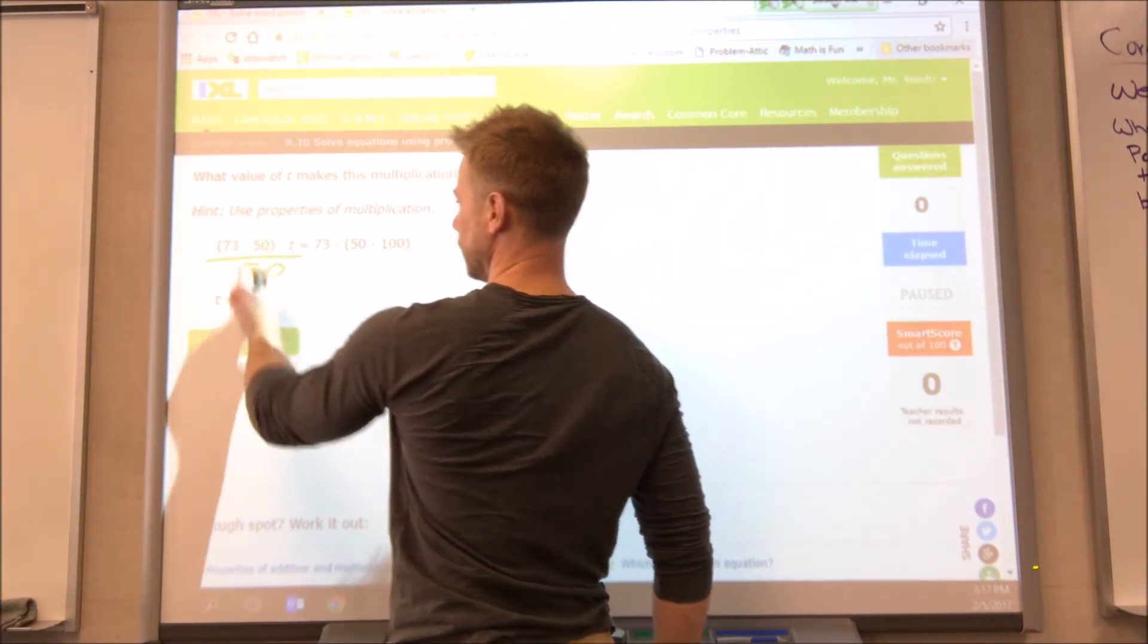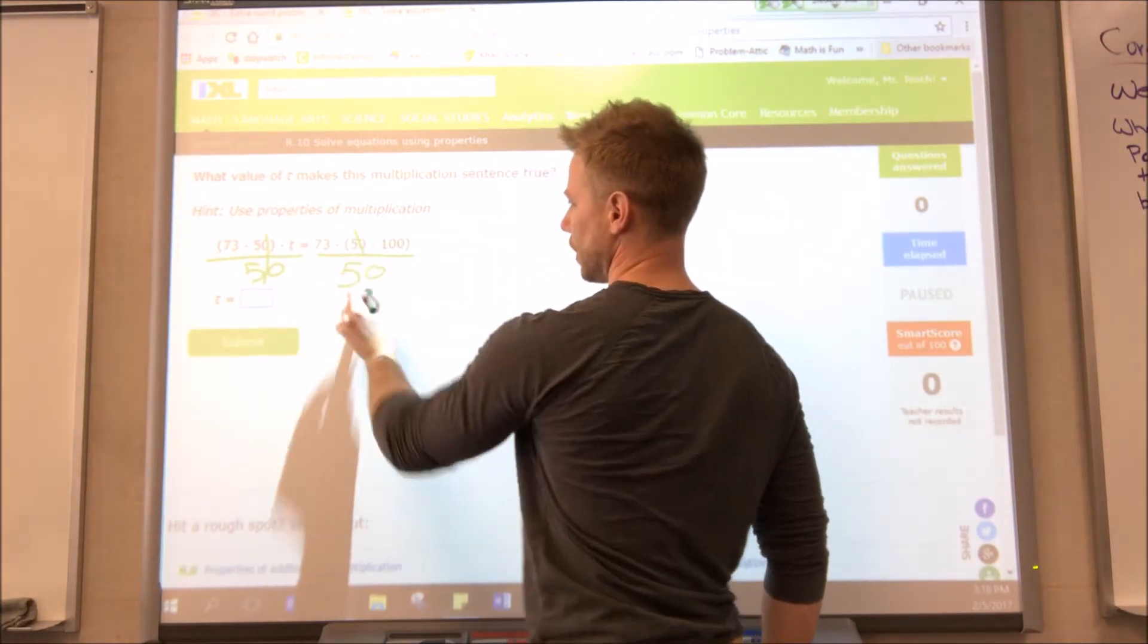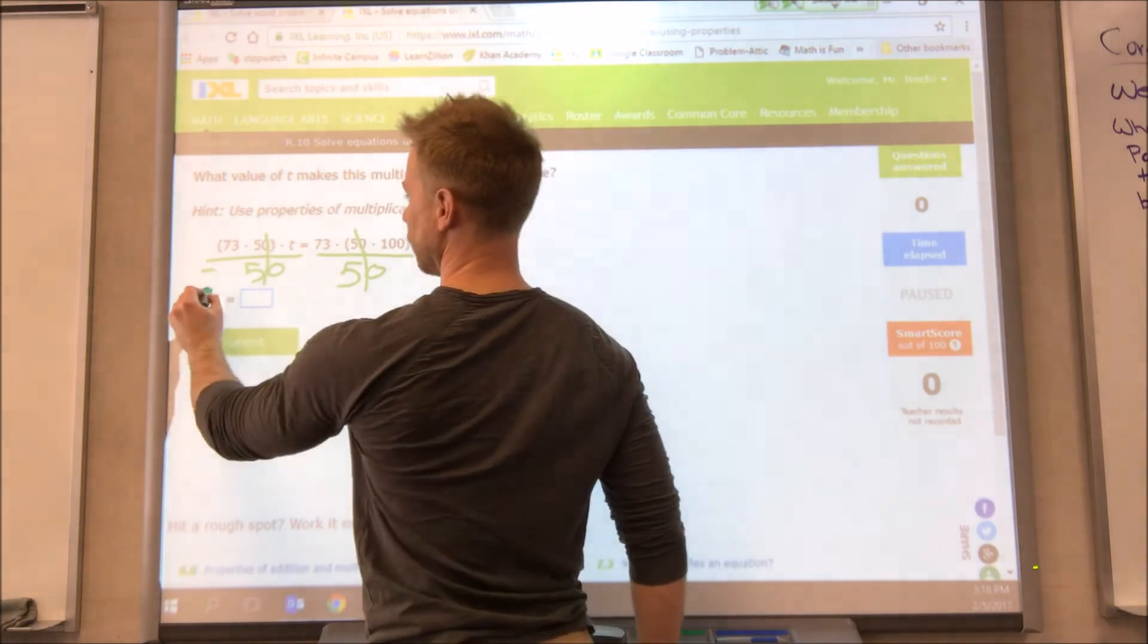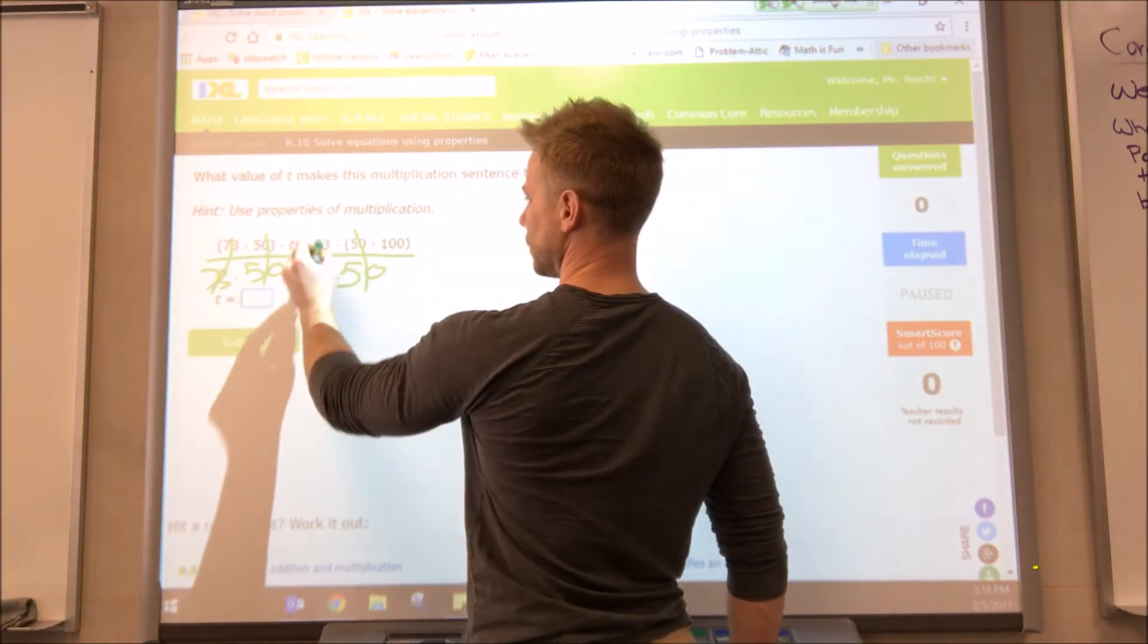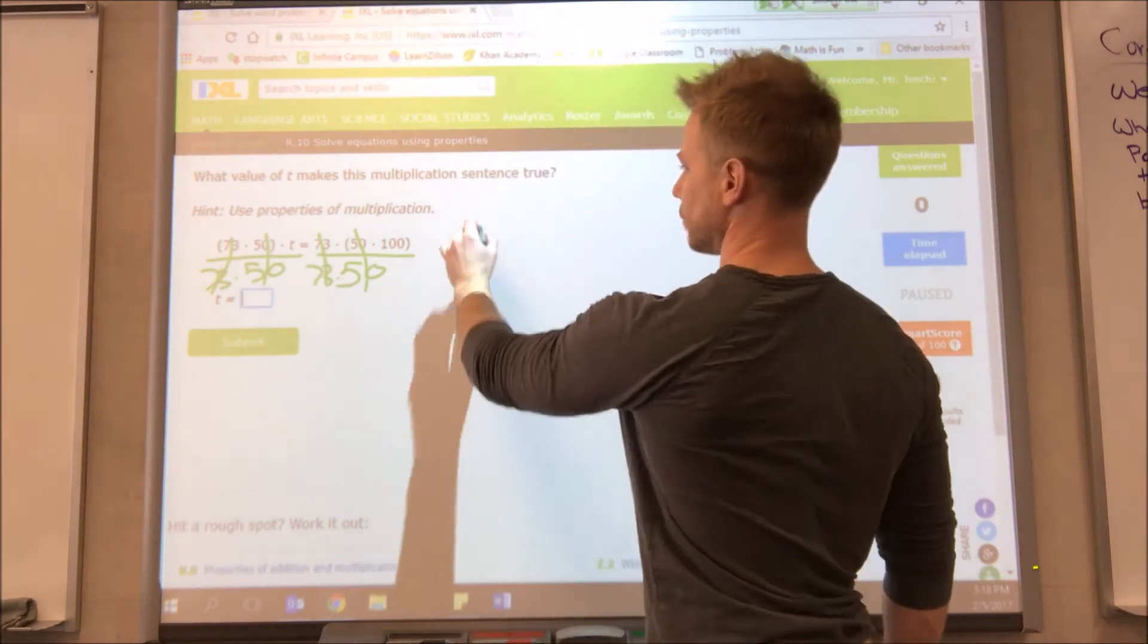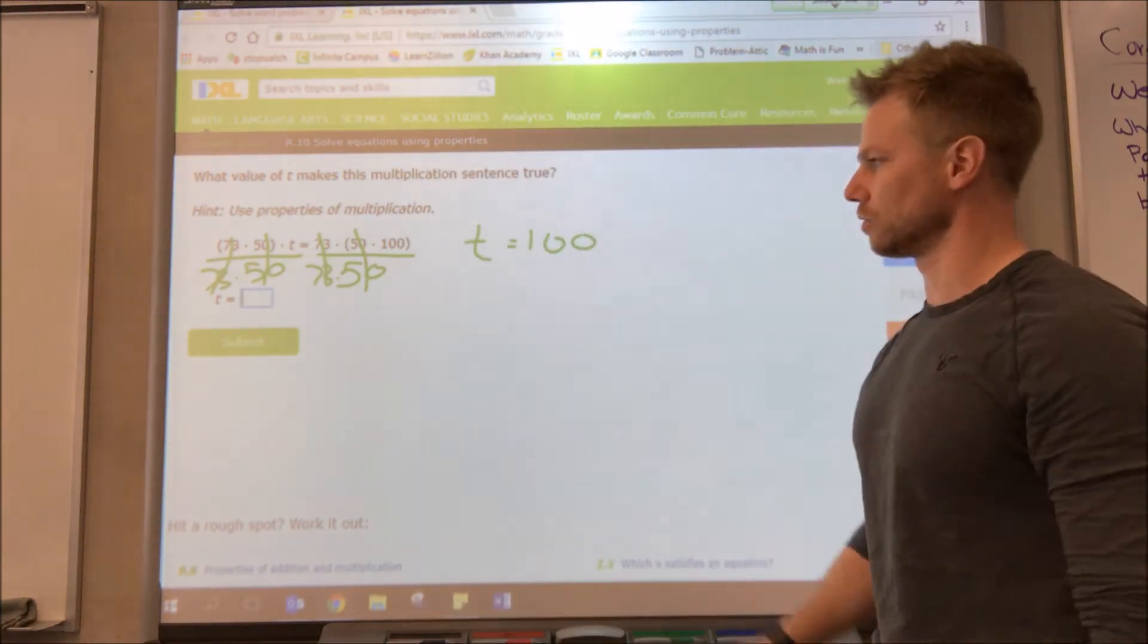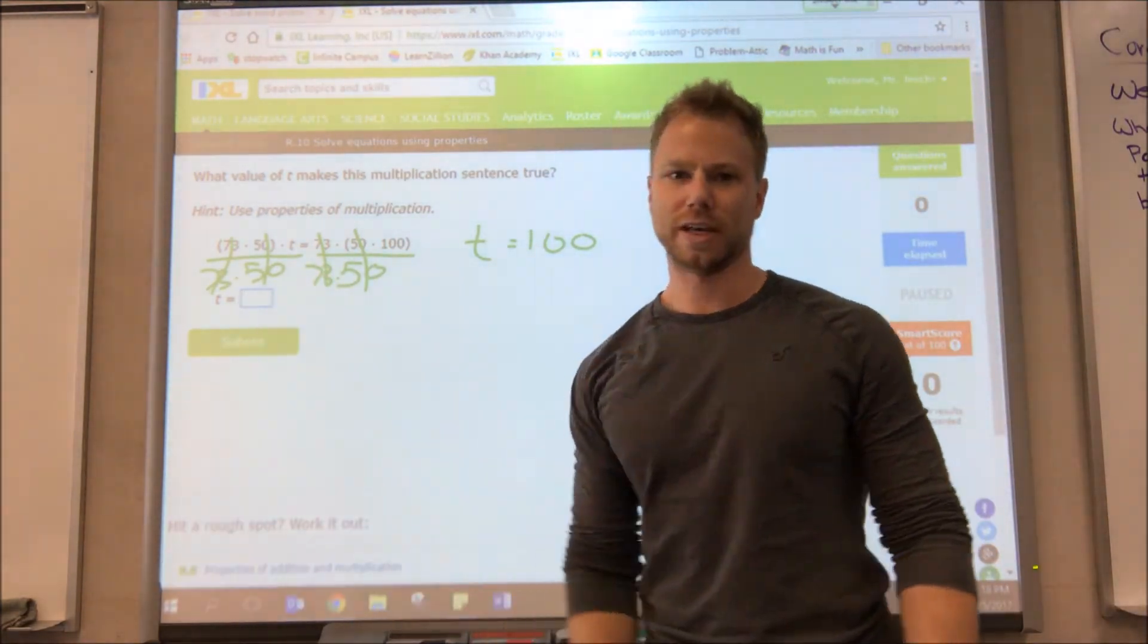So I can divide by 50, it's going to cancel there. What I do to one side I do to the other side, so I have to cancel the 50 there as well. I also can divide by 73, that's going to cancel. Divide by 73, that's going to cancel. The only thing I'm left with then is t equals 100. I didn't have to multiply anything, I just cancelled, got my answer.